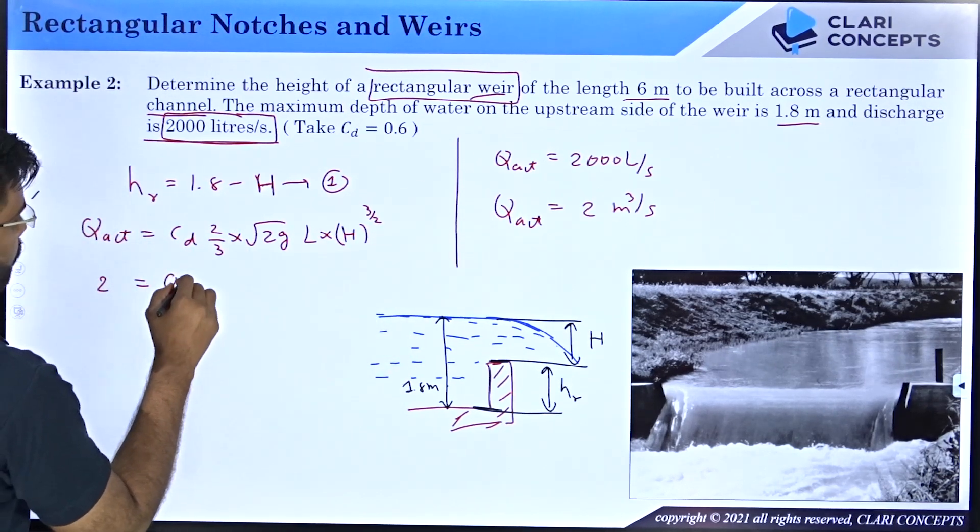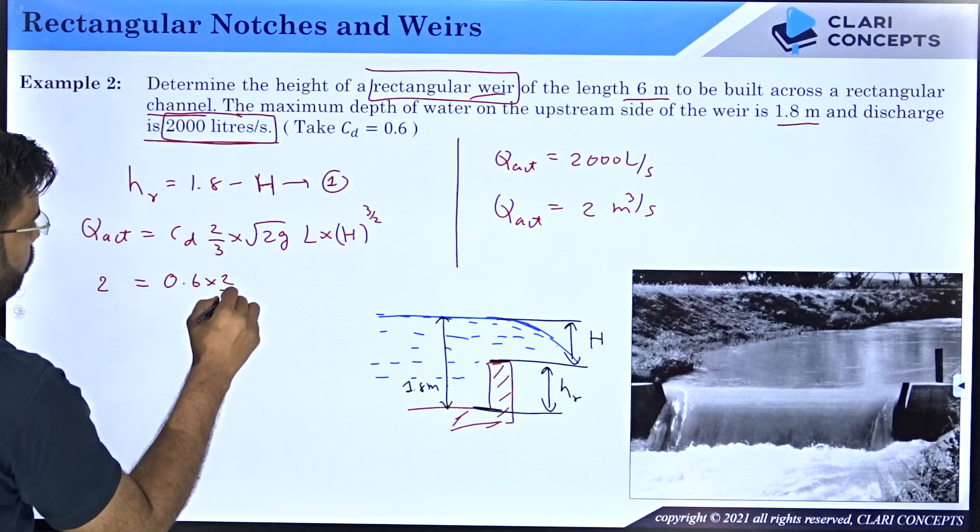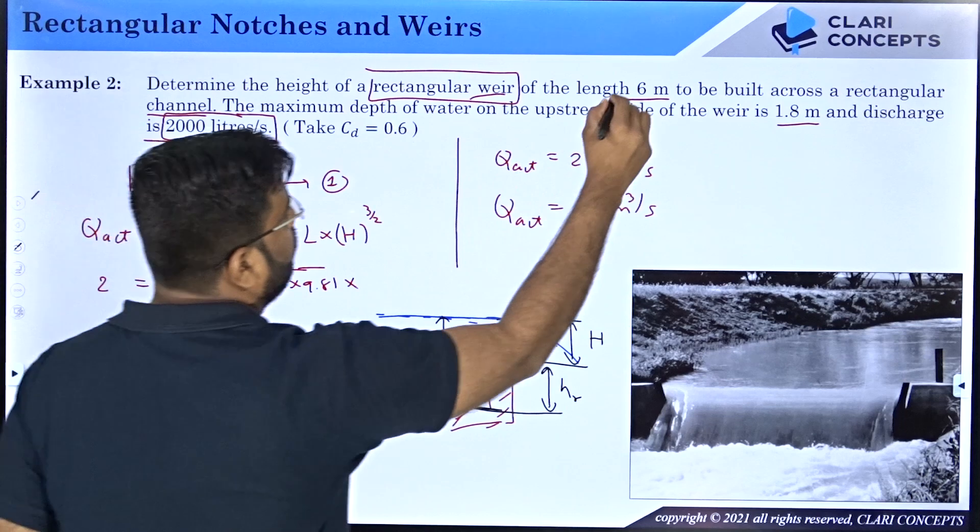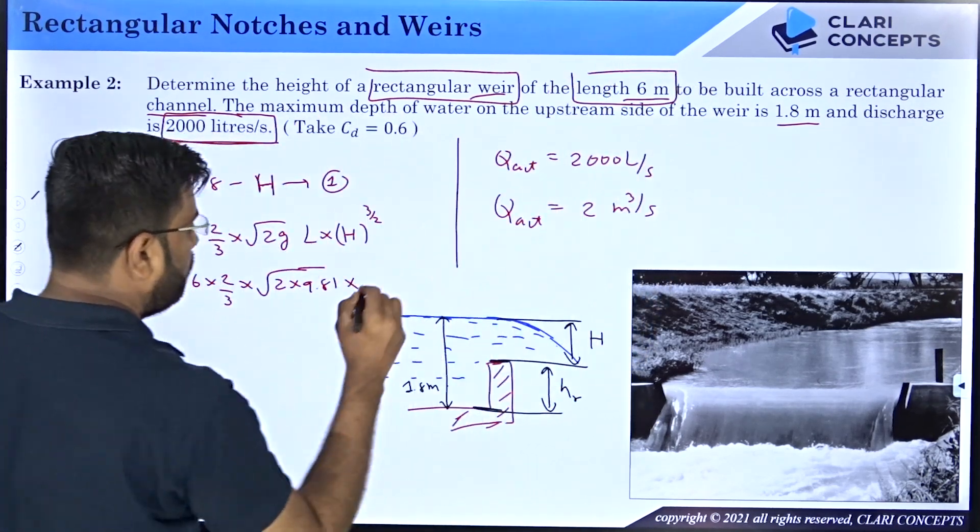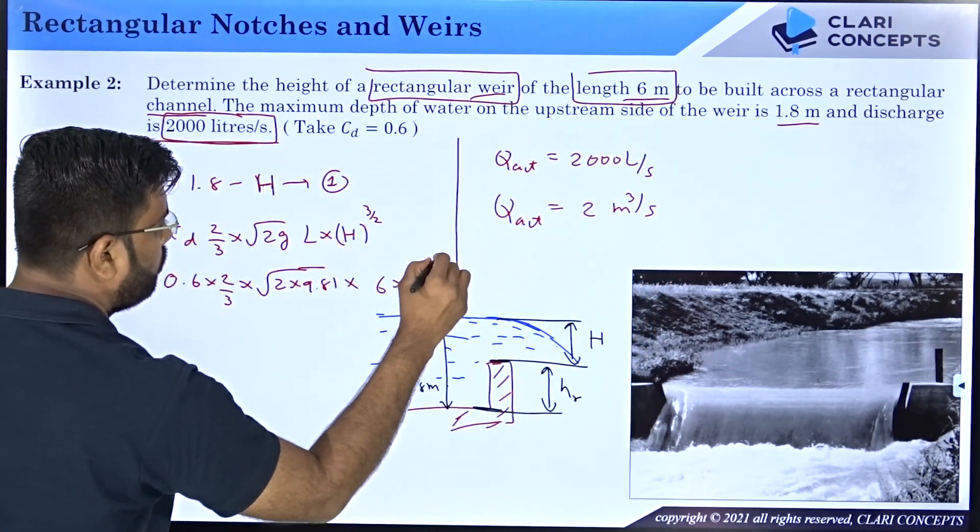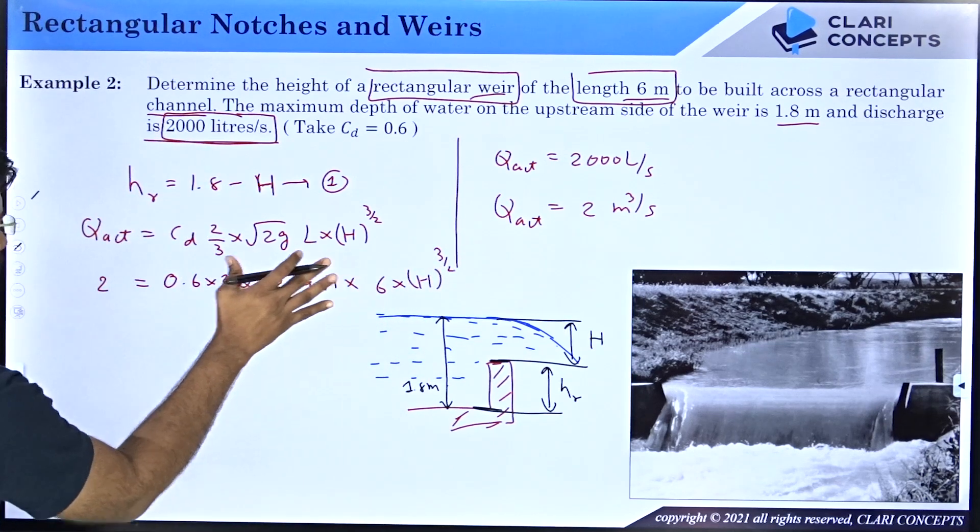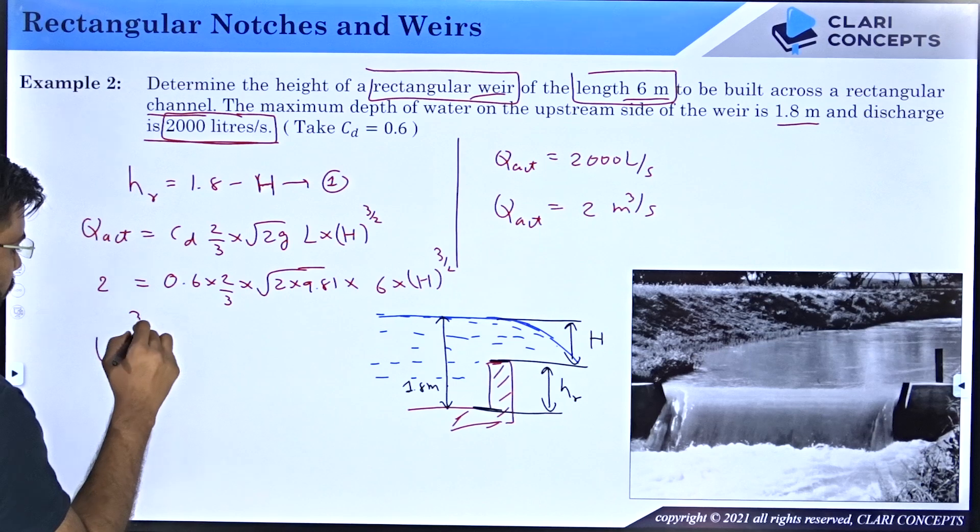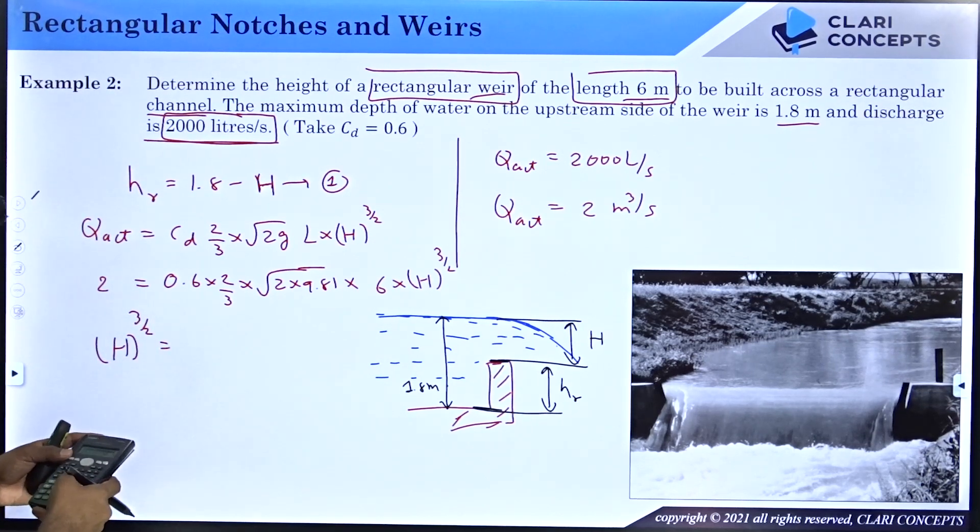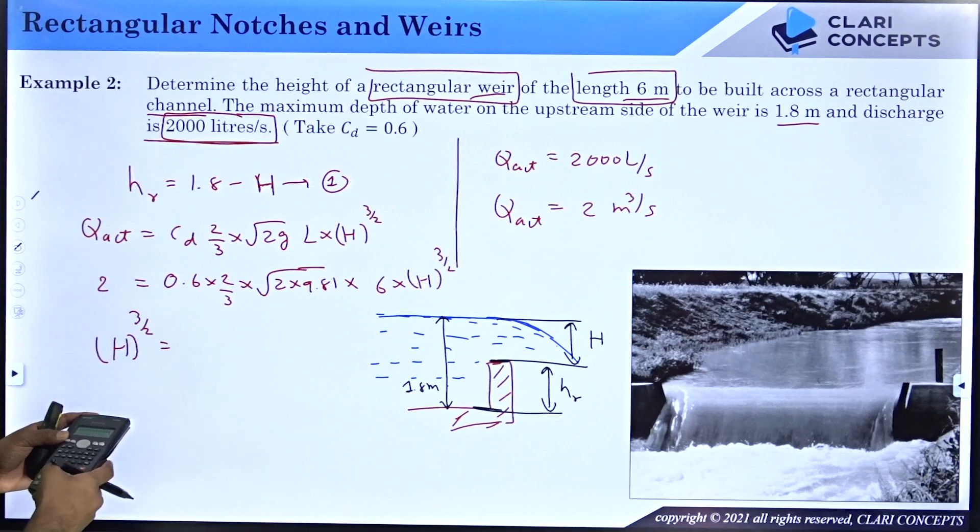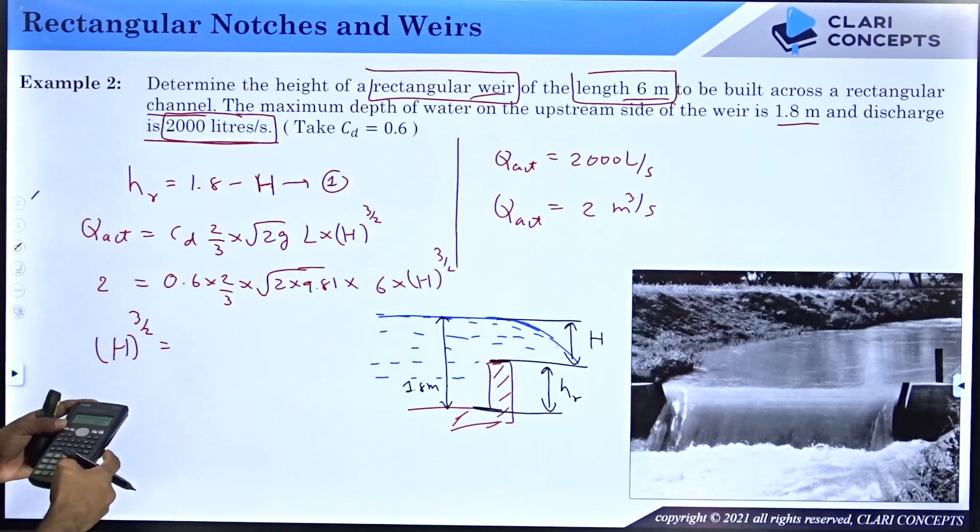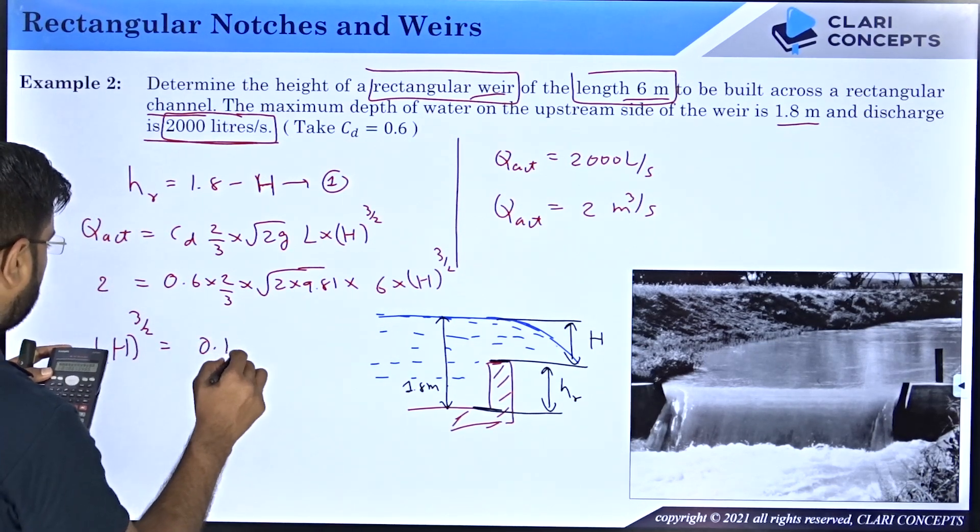So I have 2, CD is 0.6, 2 by 3 under root 2 into 9.81. What is the length? Length given to us is 6 meters. 6 into h raise to 3 by 2. So firstly I will take all this value on the left hand side. I will divide this and then I will find the value of h raise to 3 by 2. Let me calculate 2 into 3 divided by 0.6 divided by 2 divided by 6 divided by under root of 2 into 9.81. I am getting h raise to 3 by 2 as 0.188.